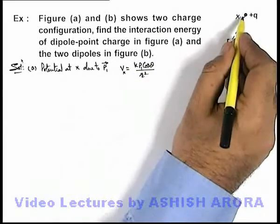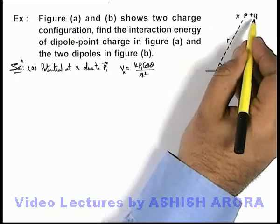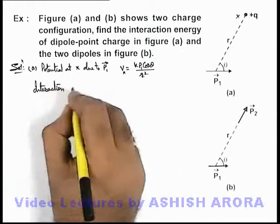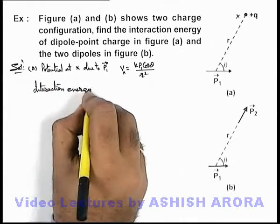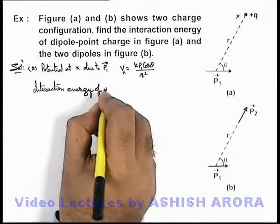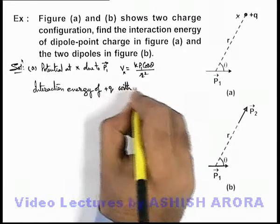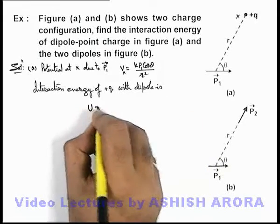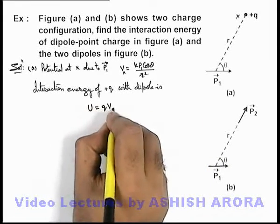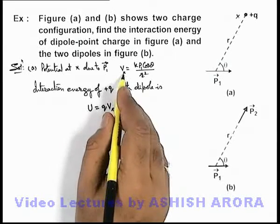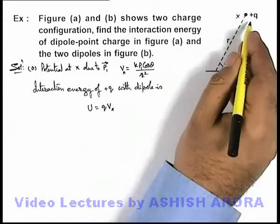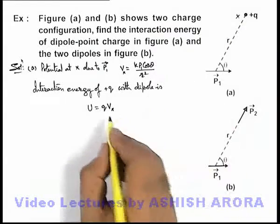If we know the potential at point x, then on placing a charge +q at this location we can find out the interaction energy of +q with the dipole. This can be directly written as U equals q Vx, because potential we define as interaction energy of a unit positive charge, so due to a charge q the potential can be written as q Vx.